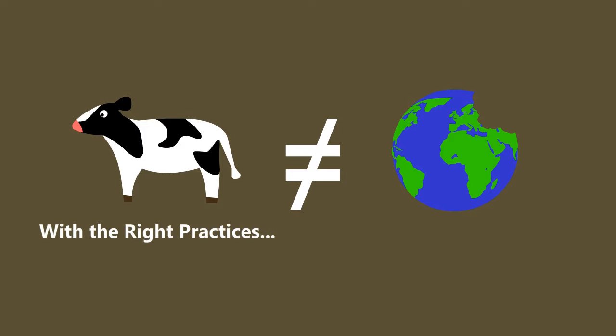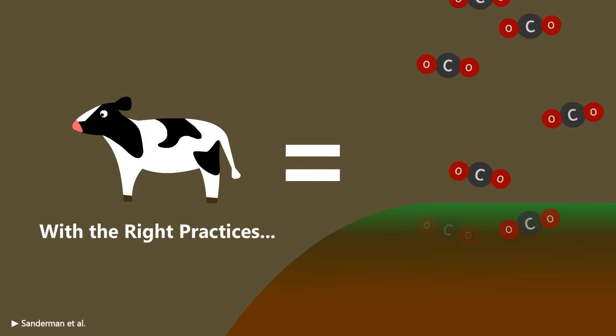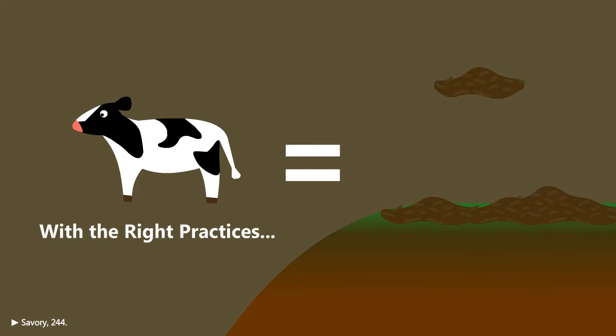If the right practices are put in place, enormous amounts of carbon can be sequestered into the ground, soil can be built, and even desertification can be reversed in a matter of years.